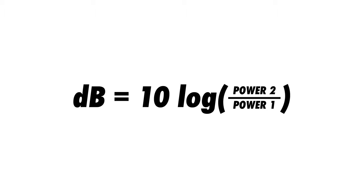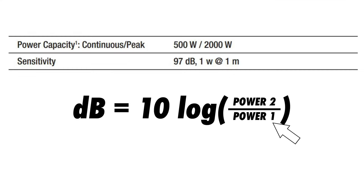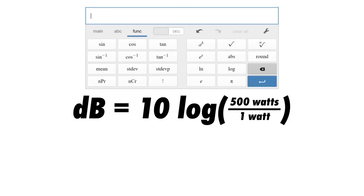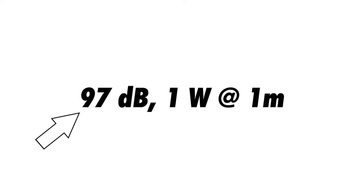Let's look at how sensitivity and power capacity are related. If this speaker produces 97 dB SPL at one meter with one watt, how loud will it be when supplied with 500 watts — its continuous power capacity? This formula will help us answer that question. Power 1 is our wattage from the sensitivity specification; Power 2 is the continuous power capacity, 500 watts. This formula can be solved using a scientific calculator. The formula tells us that the difference between 1 watt and 500 watts is nearly 27 decibels. So by adding 27 to the 97 from the specs, we can calculate that the speaker is capable of producing 124 dB SPL at one meter.